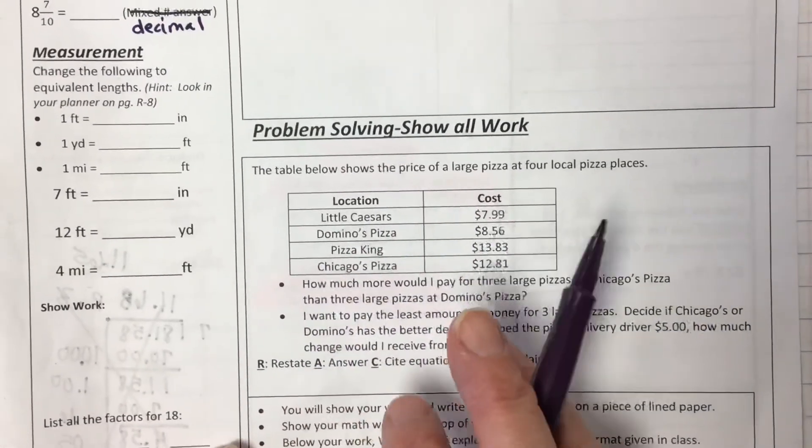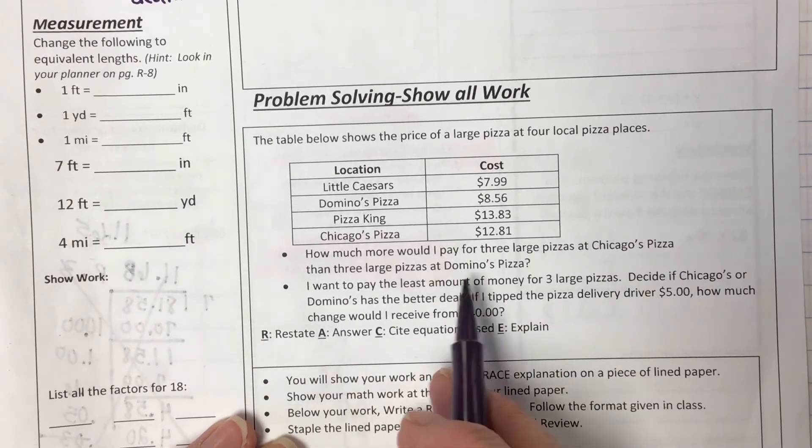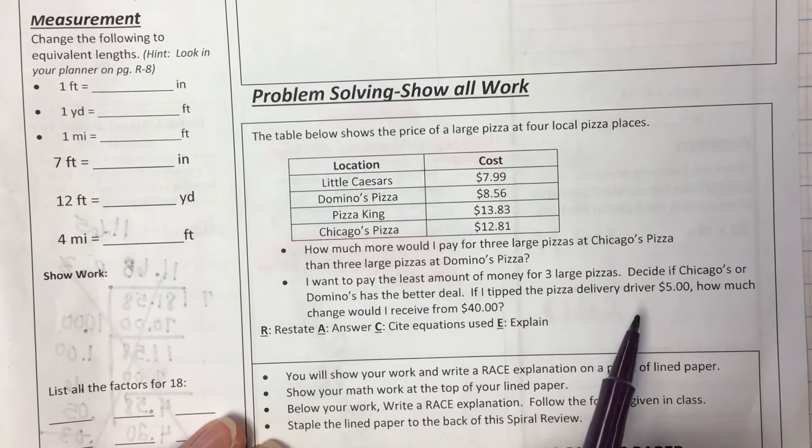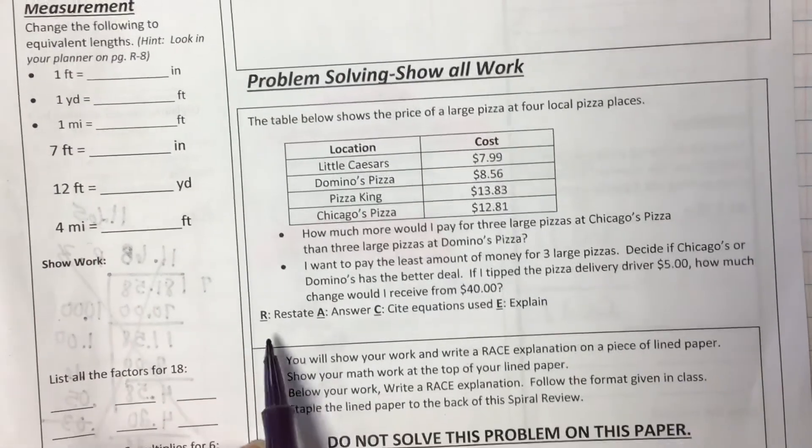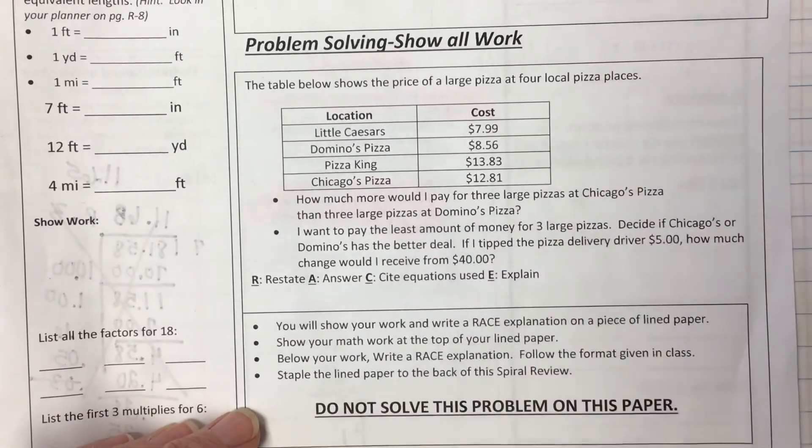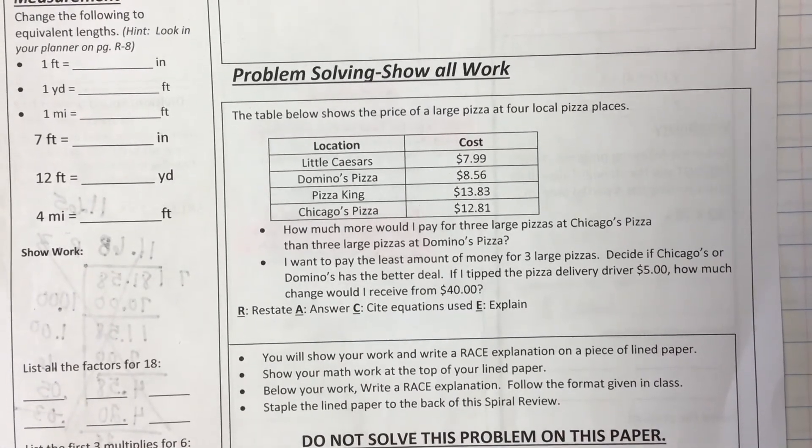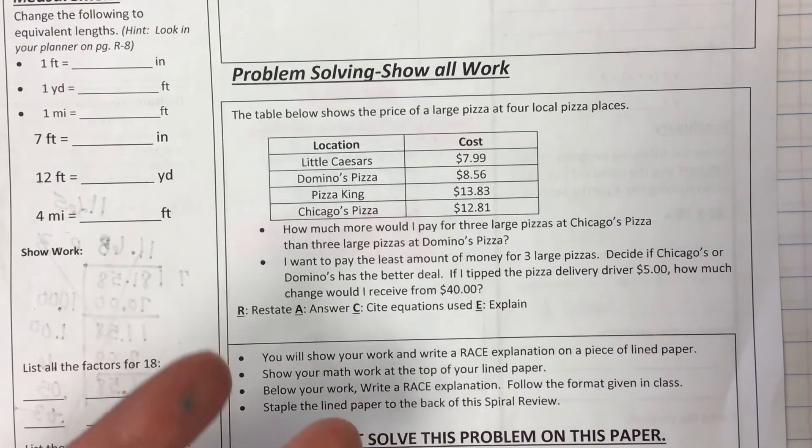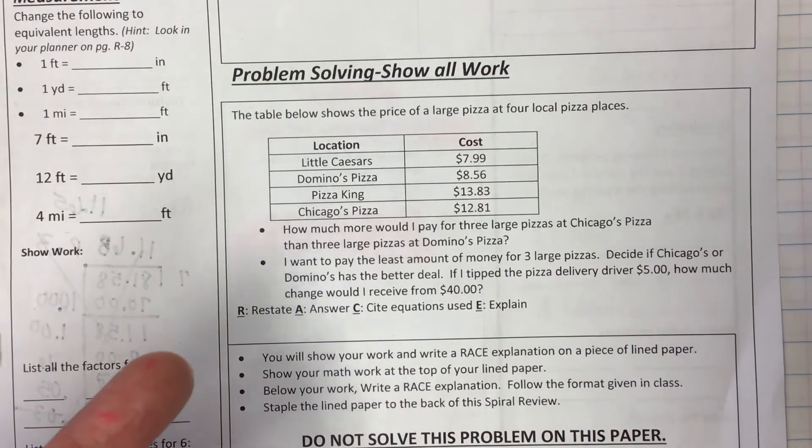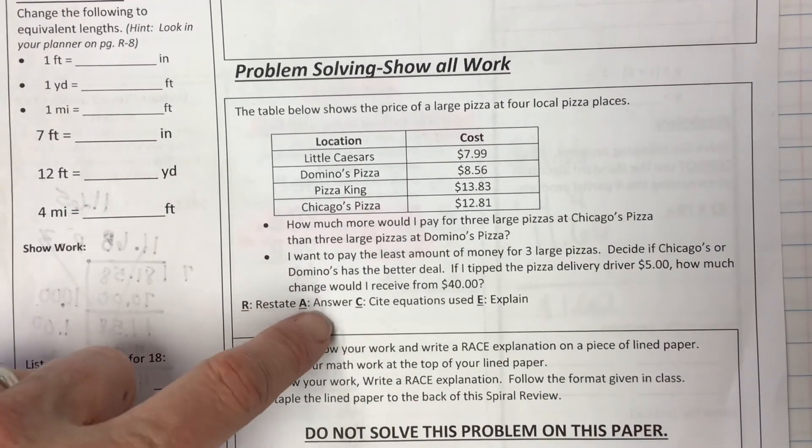And then here we have a table that shows the price of a large pizza at four local pizza places. How much more would I pay for three large pizzas at Chicago's than three large pizzas at Domino's? I want to pay the least amount of money for three large pizzas. Decide if Chicago's or Domino's has the better deal. If I tip the pizza delivery driver $5, how much change would I receive from $40? Restate, answer, cite, and explain. I have to see this on a line sheet of paper or I will not grade it. You cannot shove your race response here. Now, let's think about it. Let's think about how many sentences. You're going to have a sentence to figure out the cost of the pizza at Domino's, the cost of the pizza at Chicago's, the adding on the tip, subtracting to get your change. That's four different equations. I think you can get this done in five sentences or less. Five sentences or less on this. Okay. You should be able to do this in five sentences or less.